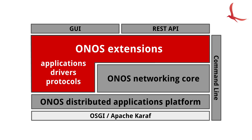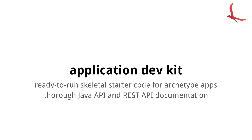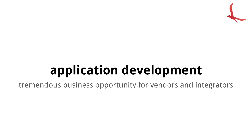ONOS extensions seamlessly augment the functionality of the base system at all layers — whether new southbound drivers and protocol providers, new distributed core components for tracking new types of state, or northbound services for accessing that state. This extensibility also applies to the ONOS REST API, command line interface and graphical user interface. Our goal was to enable applications to extend these surfaces so that new functionality completely blends in and becomes structurally indistinguishable from the base platform. The ONOS Developer Toolkit provides tools and starter code that make it easy for developers to get started, and this extensibility presents tremendous business opportunities for vendors and system integrators to build differentiating value atop the commodity ONOS platform.